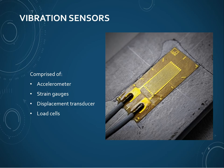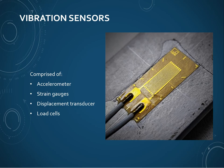Examples include accelerometers, strain gauges, displacement transducers, and load cells. A vibration sensor can be thought of as a mass-spring type oscillator — these are devices that have their own dynamics. In the case of the device shown here on the right, we are looking to infer the motion of the base from the motion of the sensor mass, so the motion u is inferred from the motion y. To do this we must have a good knowledge of the sensor dynamics.